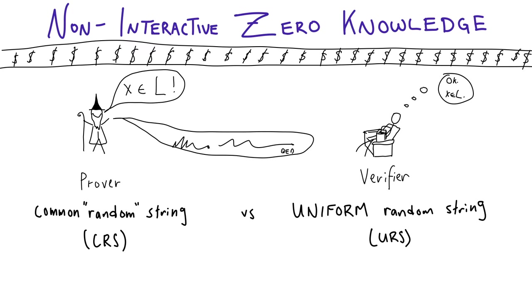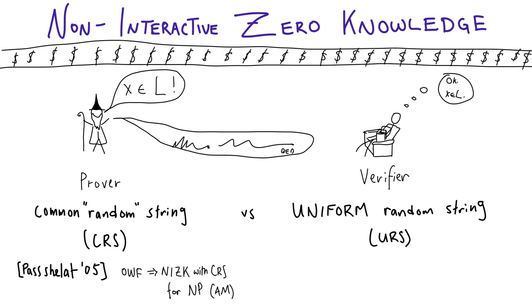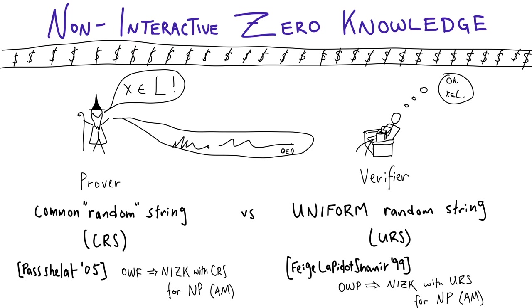What do we know about these two models? From one-way functions, we can construct NIZKs with CRS for NP — this can be extended to AM. And in the uniform random string model, we know how to construct NIZKs for NP from one-way permutations, which can also be extended.